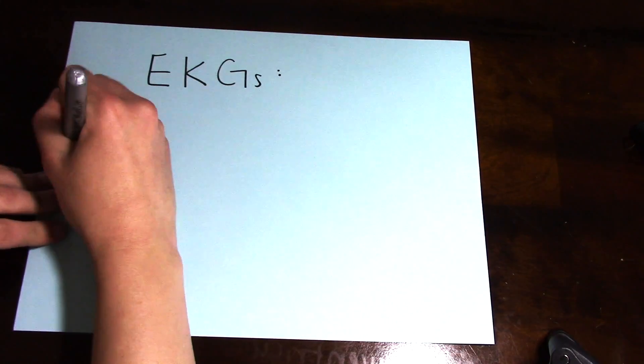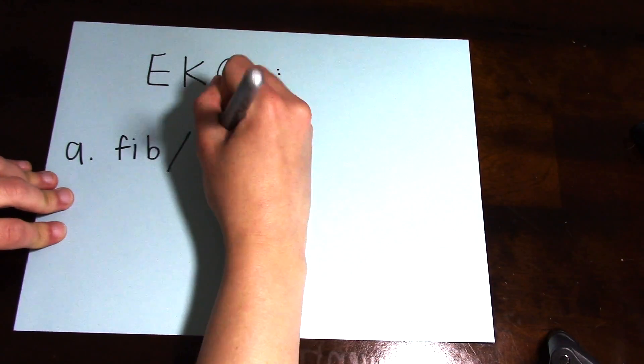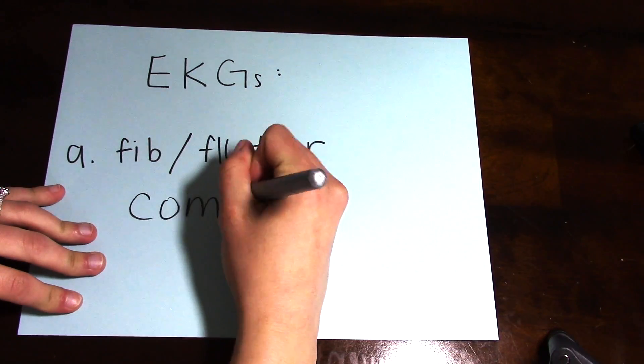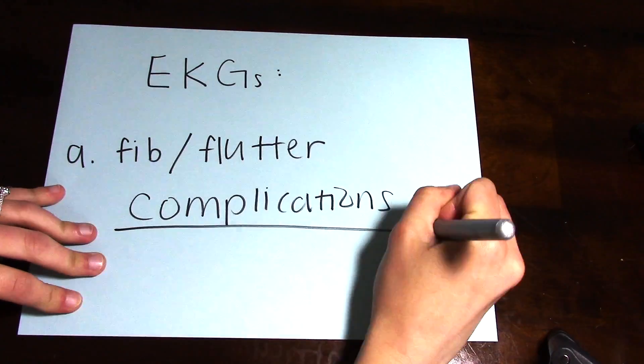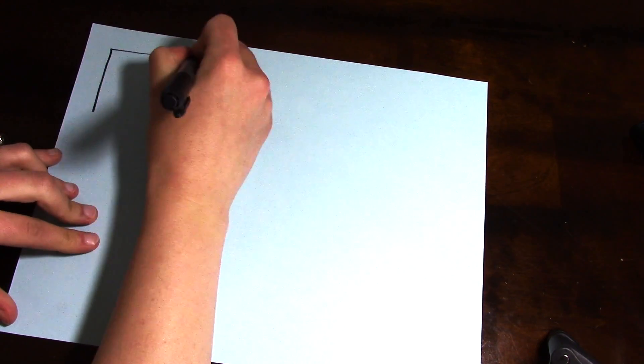In today's EKG video we're going to be talking about atrial fibrillation slash flutter, specifically the complications and some of the treatments. In order to better understand the complications of AFib, we have to understand what AFib really is.